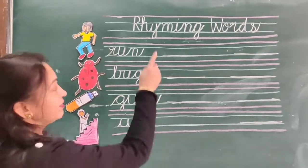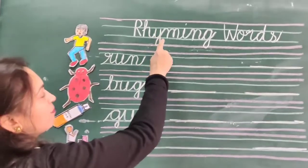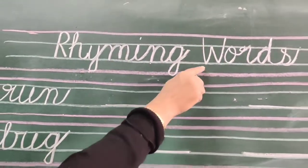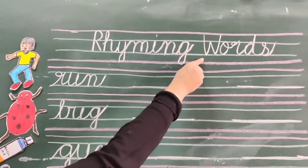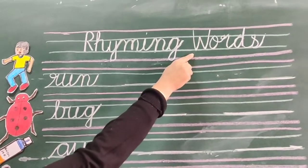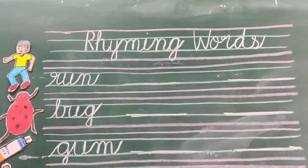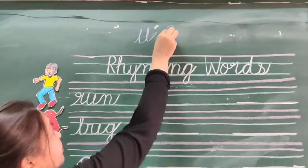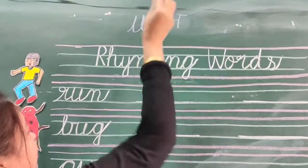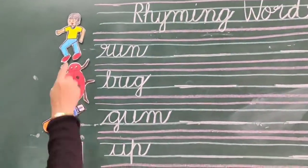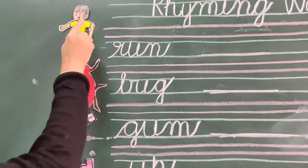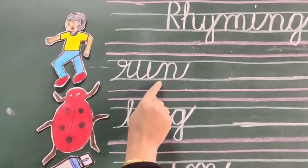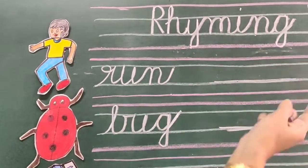Okay, this is your English notebook. Your mama will write the heading like this: Rhyming words. Today's topic is rhyming words. Ab hum U sound ki rhyming karenge. U sound ki. U says a.